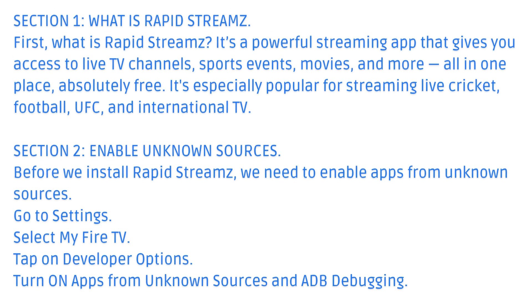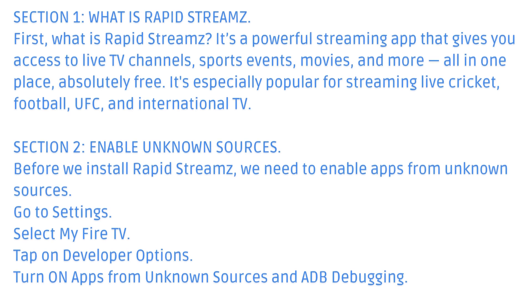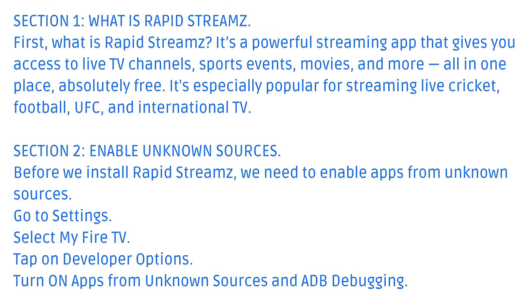Section 2: Enable Unknown Sources. Before we install RapidStreams, we need to enable apps from unknown sources. Go to Settings, select My Fire TV, tap on Developer Options, and turn on Apps from Unknown Sources and ADB Debugging.